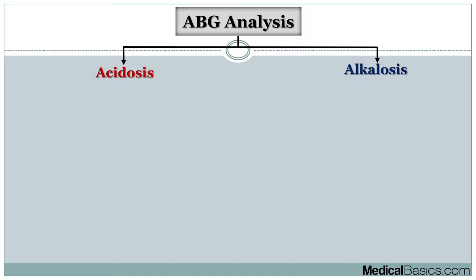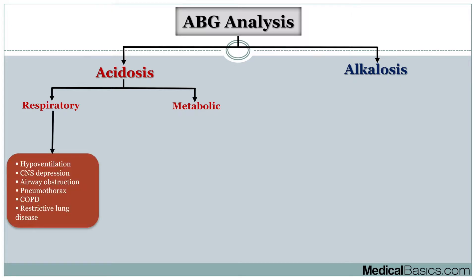We're dealing with acidosis and alkalosis — what are the different causes? Once we've figured out it's a metabolic acidosis or metabolic alkalosis, what are the different causes? First, we break it down by pH. When we have acidosis, it's either respiratory or metabolic. In the respiratory setting, it's determined by the PaCO2. If the PaCO2 is high, we're holding on to extra CO2, which leads to a respiratory acidosis. In broad strokes, respiratory acidosis is caused by hypoventilation.